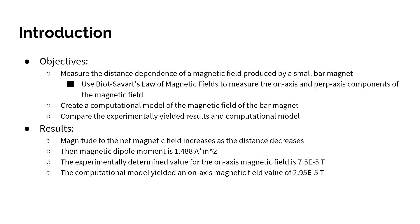The results of this lab were that the magnitude of the net magnetic field increased as the distance decreases. The magnetic dipole moment is 1.48 amp·meters squared. The experimentally determined value of the on-axis magnetic field is 7.5 times 10 to the negative 5 teslas, and the computational model yielded an on-axis magnetic field value of 2.95 times 10 to the negative 5 teslas.